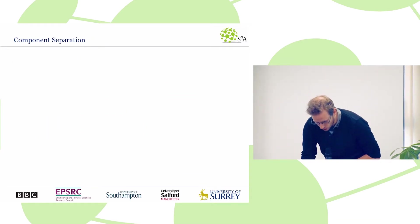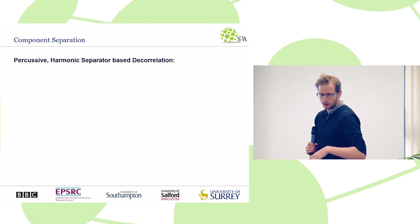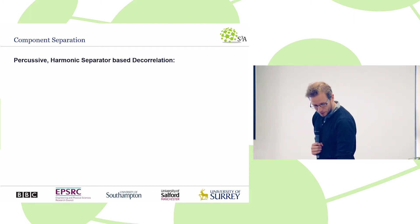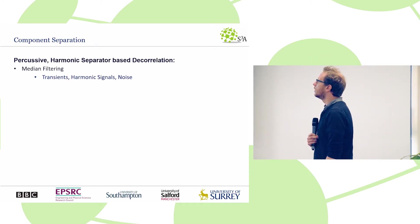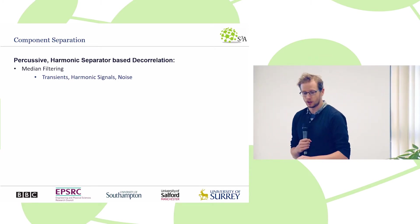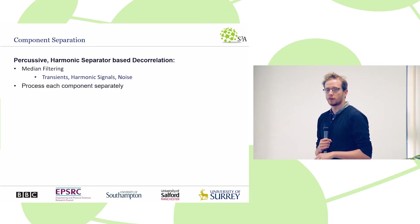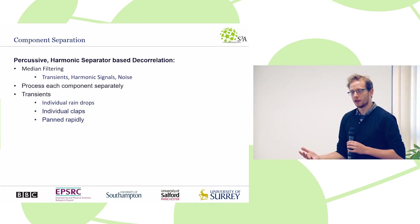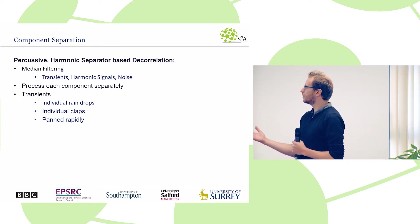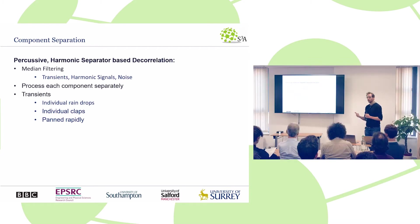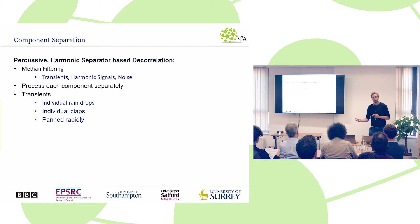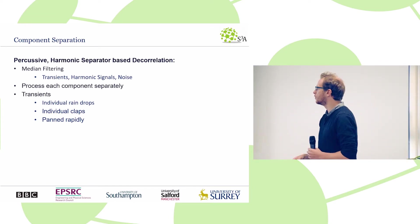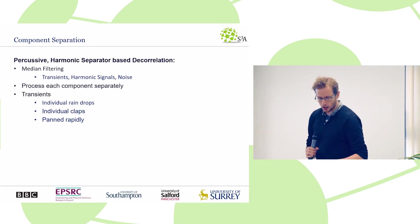What we developed was a decorrelation algorithm based on an off-the-shelf percussive harmonic separator that uses median filtering to separate the signal into transients, harmonic signals, and noise, allowing optimal processing for each component separately. For the transients — which were damaging with regular decorrelation filters — in diffuse sound fields like rain or applause, individual transients are actually individually localisable elements, such as individual raindrops or claps. So what we really want to do is randomly distribute those about the space, panning them rapidly and randomly around the space.